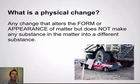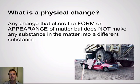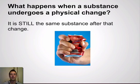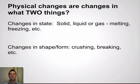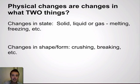Physical changes are pretty easy. It's a change that alters the form or appearance but does not make the substance into a different substance. As you can see in the picture, this truck is getting run over but it's still made of all the same things — it just looks a little different. When a substance undergoes a physical change, it's still the same substance after that change. Physical changes involve a change in state — solid, liquid, or gas — or a change in shape or form, for example crushing or breaking something.